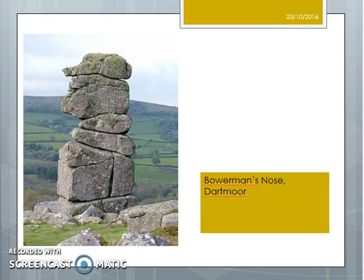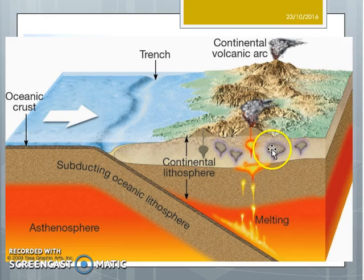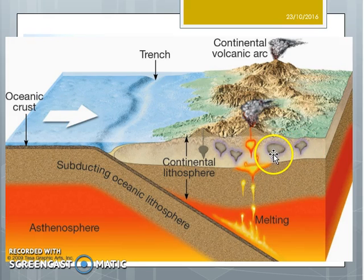This one is called Bowerman's Nose. It starts off as one of these things here — these are granite plutons. This is magma that is rising up through the crust but has then stopped rising. It did not make it to the surface, so it is an intrusive igneous rock.